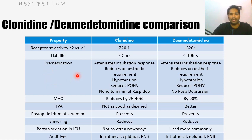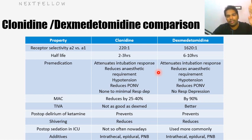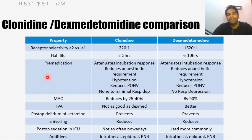When used as pre-medication, both drugs attenuate the intubation response. During intubation, even with propofol, thiopentone, or succinylcholine, the patient can have significant pain with increase in heart rate and BP. Pre-medication with clonidine or dexmedetomidine attenuates this response, keeping BP in normal ranges. This is very useful in hypertensive or myocardial infarction patients. Like opiates, these drugs reduce the anesthetic requirement — volatile anesthetic requirement is much reduced. Both produce hypotension and bradycardia, and both reduce post-operative nausea and vomiting (PONV).